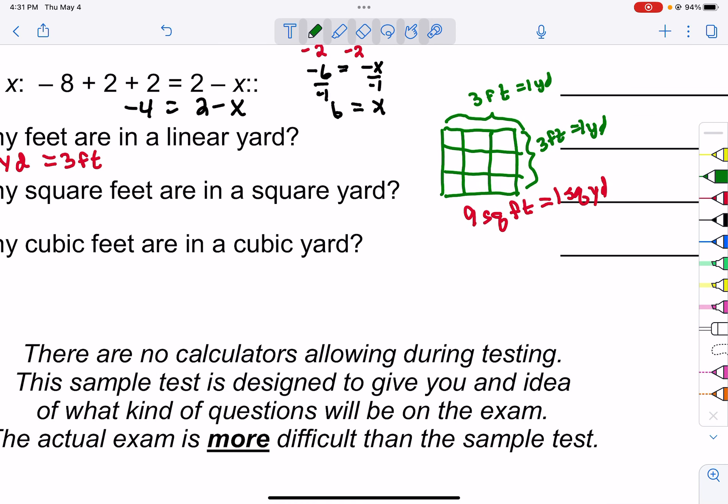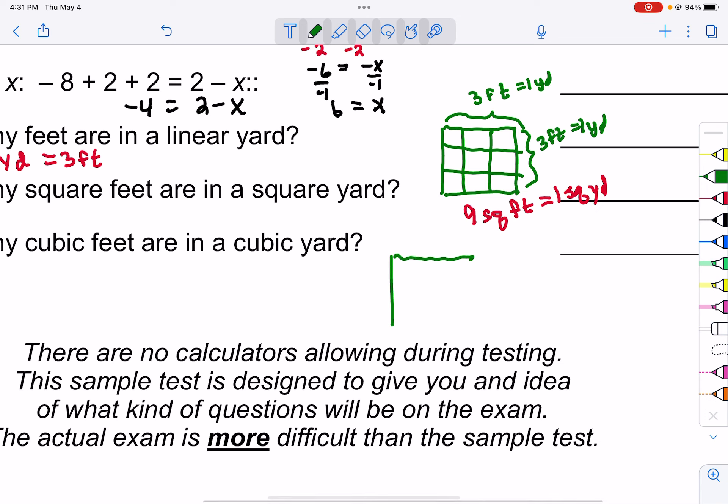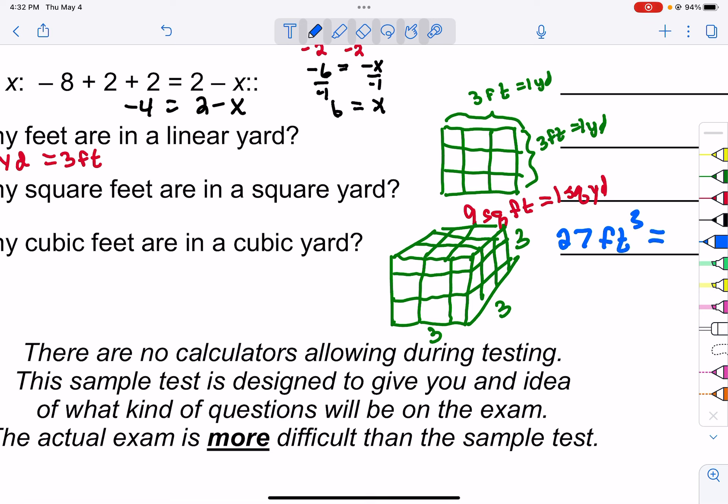That's where we're getting to. So there, if we make this three-dimensional, and I apologize for my drawing skills here, but you'll get the idea. You can see that it's three by three by three by three. So that's why that is 27 cubic feet, which you can write like that, or you can write cubic feet is one cubic yard.